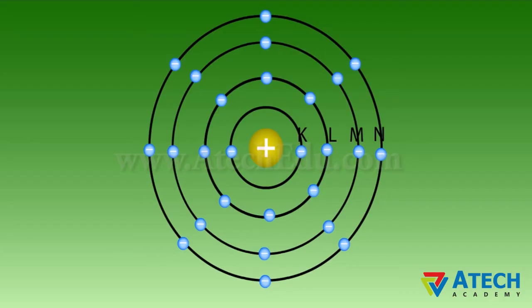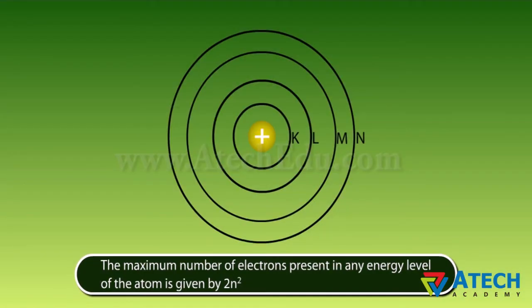Bohr and Bury suggested the distribution of electrons into different orbits of an atom. Electrons are arranged in various energy levels of an atom. Certain rules are followed for writing the number of electrons in different energy levels or shells.